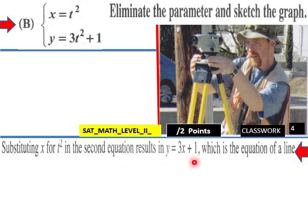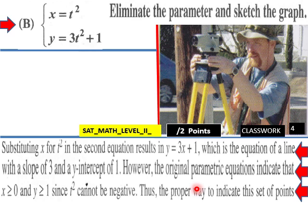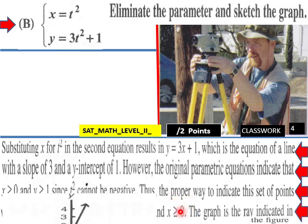Which is the equation of a line with a slope of 3 and Y intercept of 1. However, the original parametric equations indicate that X is greater than or equal to 0 and Y is greater than or equal to 1, since t squared cannot be negative.